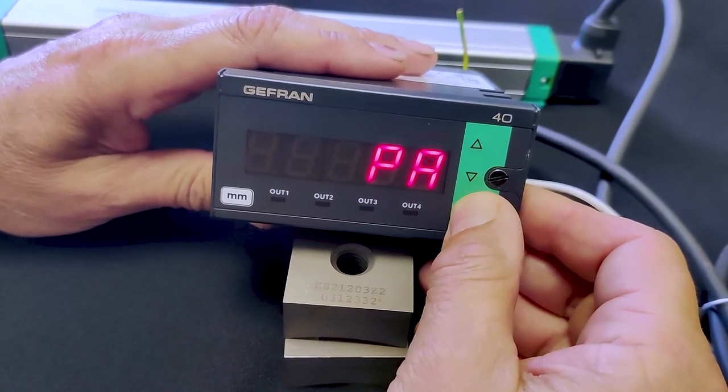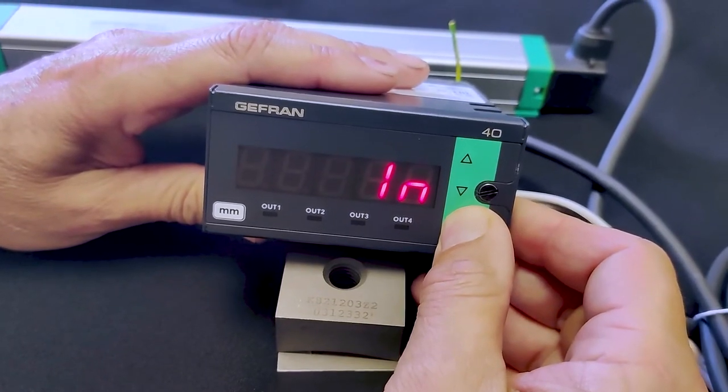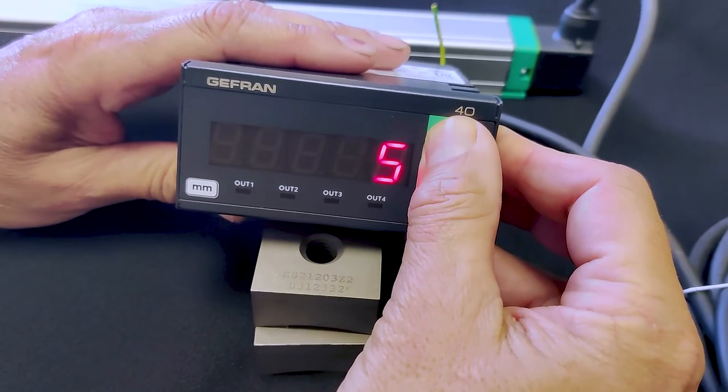To get to the user calibration you press and hold on the F key until you reach PA, which stands for password. The default password is 99.